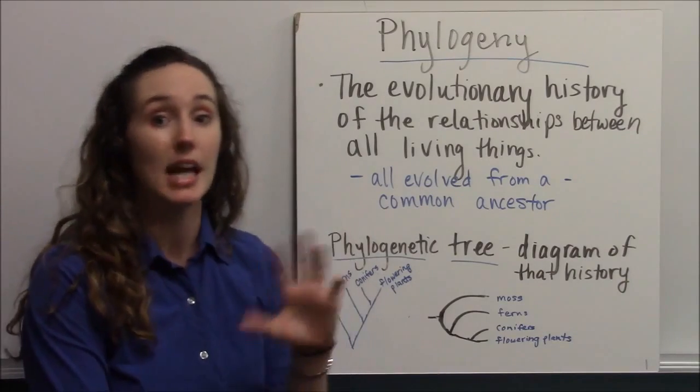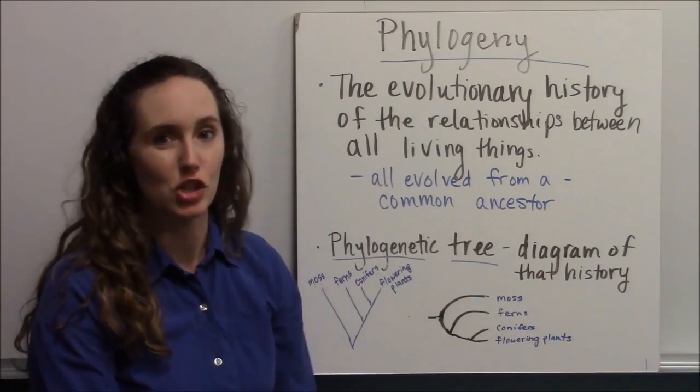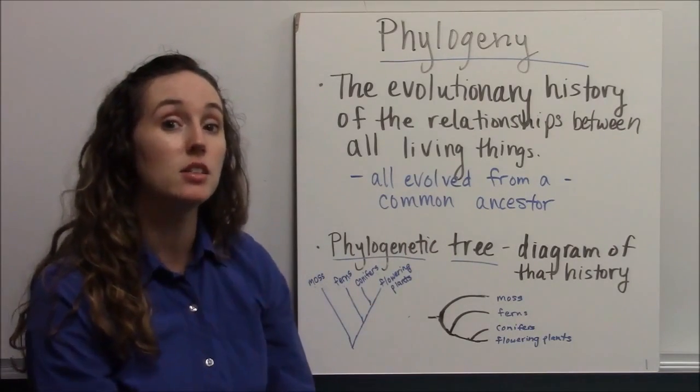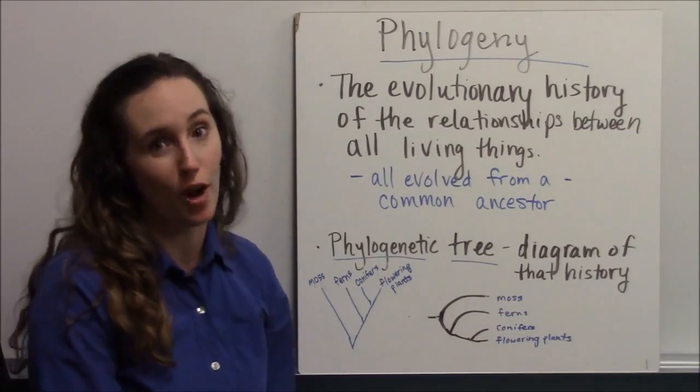Phylogenetic trees can look different ways, but we can read them and understand evolutionary relationships when we look at them. So let's take a look at some of the parts and the structure of a phylogenetic tree, so that we can figure out how to read it later.